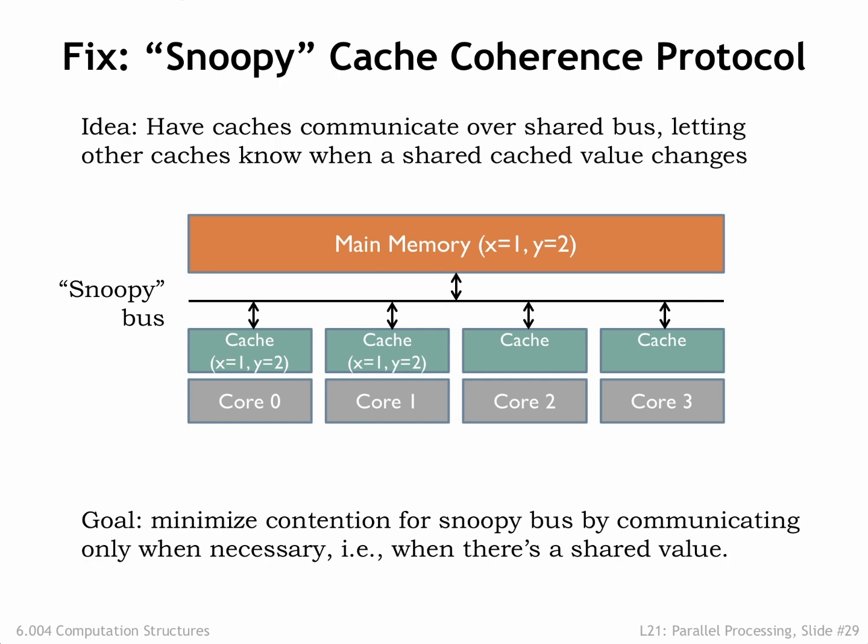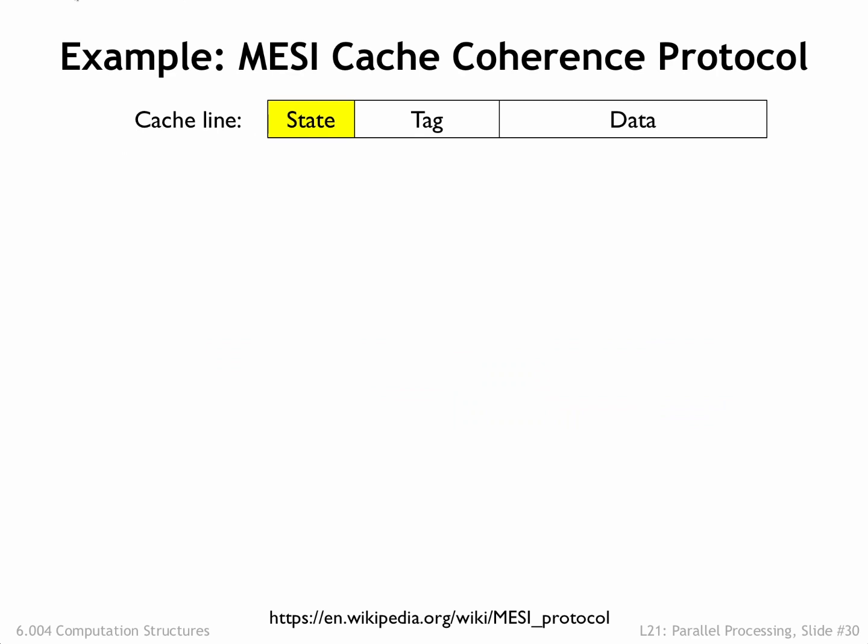In designing the protocol, we'd like to incur the communications overhead only when there's actual sharing in progress, i.e., when multiple caches have local copies of a shared variable. To implement a cache coherence protocol, we'll change the state maintained for each cache line.